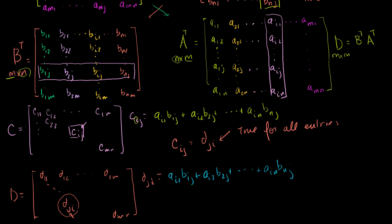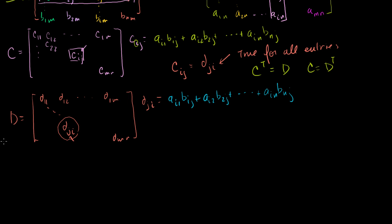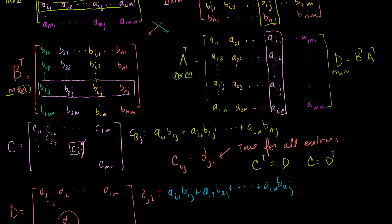So what does this mean? This is the definition of a transpose. So we now get that c transpose is equal to d. Or you could say that c is equal to d transpose. Now this is pretty interesting, because how did we define these two? We said that our matrix C is equal to the matrix product A and B. And we said that d is equal to our matrix product B transpose times A transpose. I did those definitions right there.